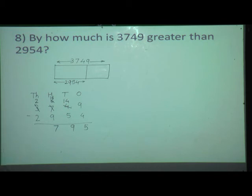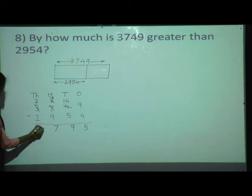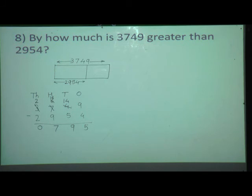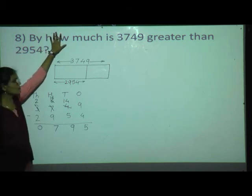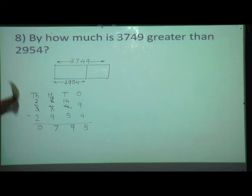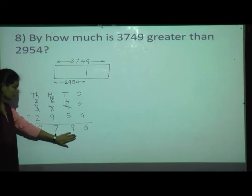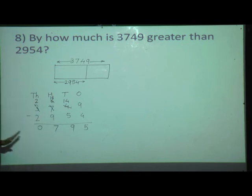See the thousands place. Here 2 is there, and here also 2 is there. 2 minus 2 — what will remain? 0 will remain. So what is our answer? The answer is 795. How will you write the answer? 'By how much is 3,749 greater than 2,954?' — just cut the question word 'by how much' and instead of that word, put this number and write the answer in your sentence.